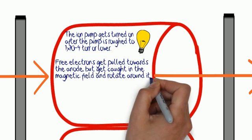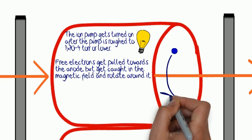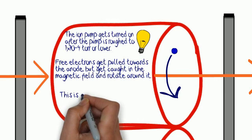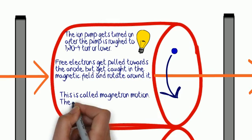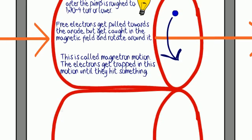Free electrons are going to get pulled towards that anode assembly, but they're going to get caught in that magnetic field and rotate around it. This is actually called magnetron motion, and the electrons get trapped until they actually hit something like a gas molecule.